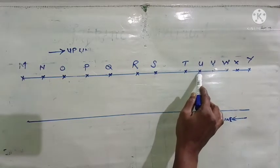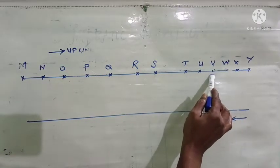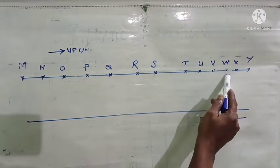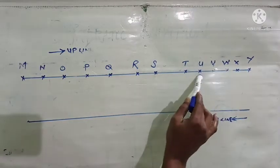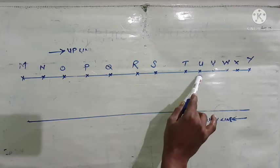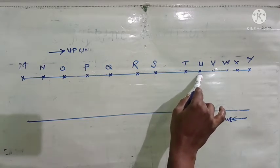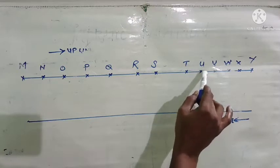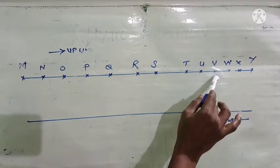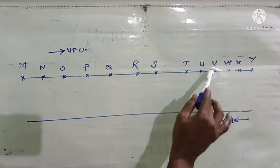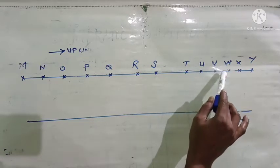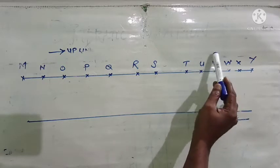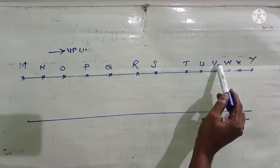Our train which has left station U is approaching station V. Thereafter it will go to station W. Our train has already experienced the failure of home signal at station U and also flickering of the starter signal. Now it has left station U and is approaching station V. Let us have an enlarged view of station V.